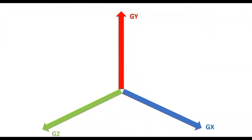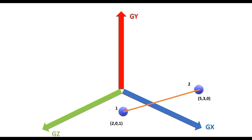Let us consider a member situated between node 1 and node 2 with coordinates 2, 0, 1 and 5, 3, 0 respectively. Node 1 is on the XZ plane while node 2 is on the XY plane. The nodes have been purposely chosen to simplify the visualization, but whatever we discuss is applicable to any case where the member is not parallel to any of the global axes. If you have a confusion on the conception of global planes, you can visit one of the earlier sessions in this series.